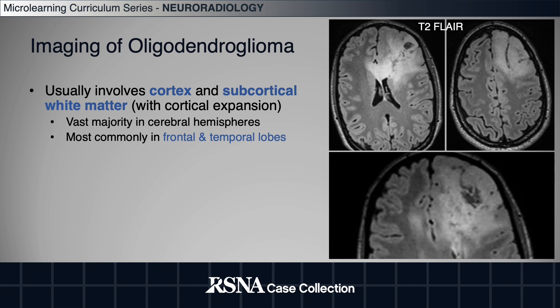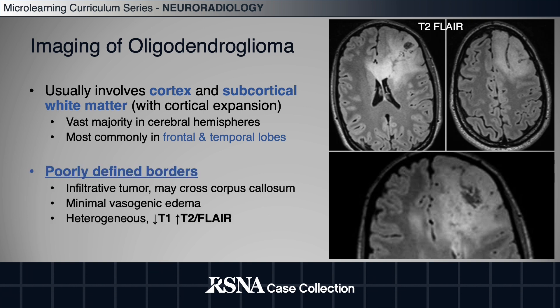These are infiltrative tumors. They can cause cortical expansion and gyral enlargement and infiltrate the white matter with poorly defined borders. They can cross the corpus callosum.